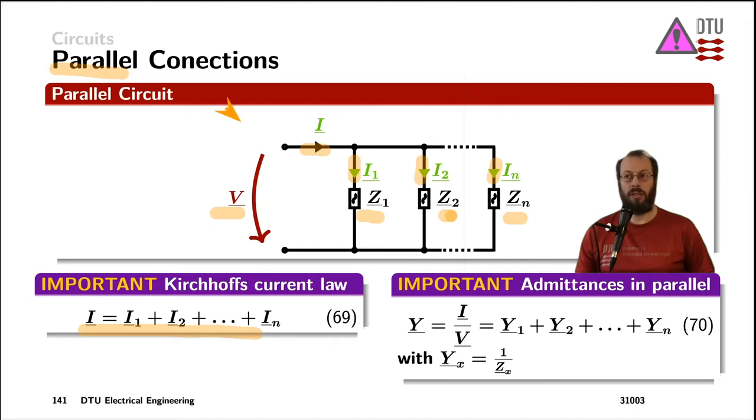The admittance seen from the top terminal down to the bottom terminal, looking into the circuit from the voltage side, is the ratio of the current flowing into all of them divided by the one voltage which is across each of them.